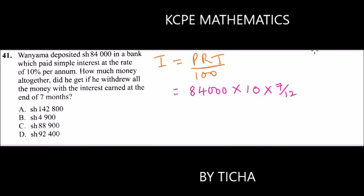This we divide by 100 just as the formula is. You can simplify - divide by 10, and divide by 10 again. 84 you can divide by 12, you get 700. 700 multiplied by 7 will give you 4,900.